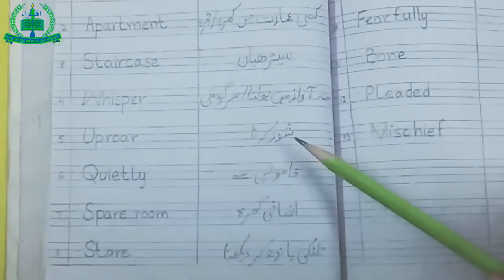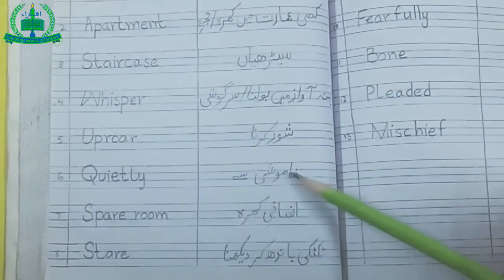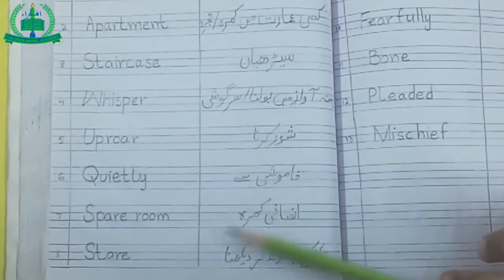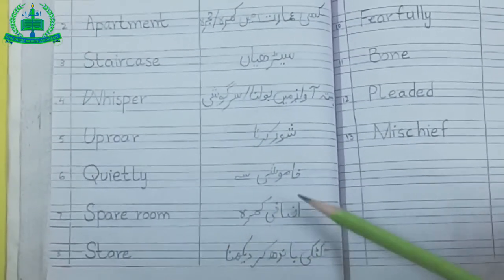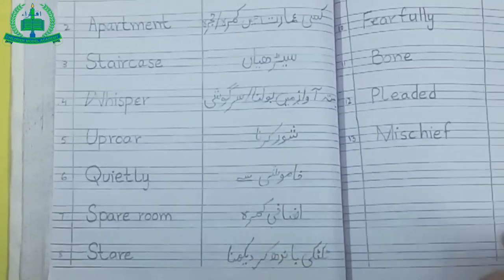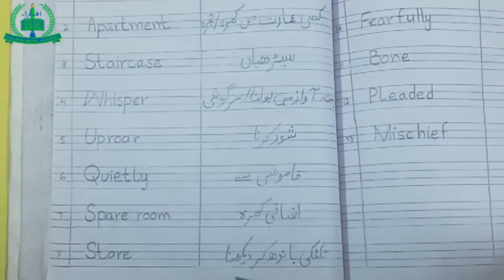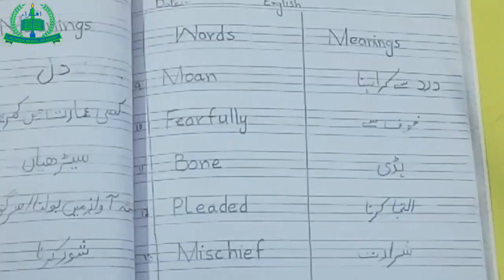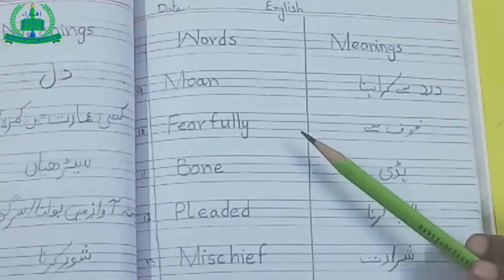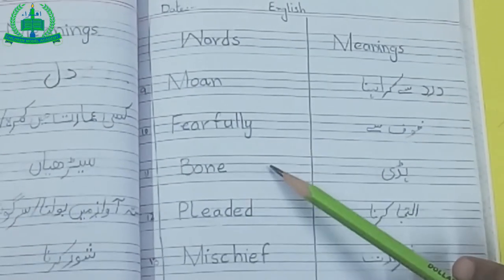Aproar — Sure karna. Quietly — Khamushi se. Spare room — Izafi kamra. Stare — Tik-tiky banh kar dhekna. Mone — Dirt se karraana.